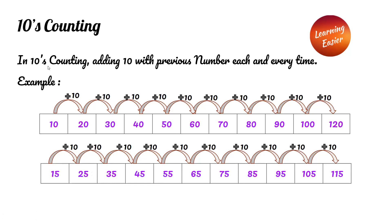Tens counting. In tens counting, we add ten with the previous number each and every time. Example: ten plus ten equals twenty, twenty plus ten equals thirty, thirty plus ten equals forty, forty plus ten equals fifty, and so on.